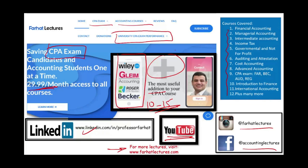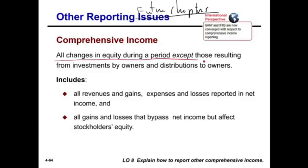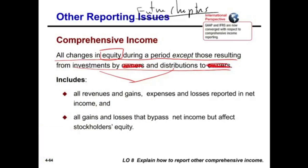So what is other comprehensive income? Comprehensive income represents all changes in equity during the period except those resulting from investment by owners and distribution by owners. So comprehensive income includes everything that affects equity except investment by owners and distribution by owners — the owners are out of the picture.